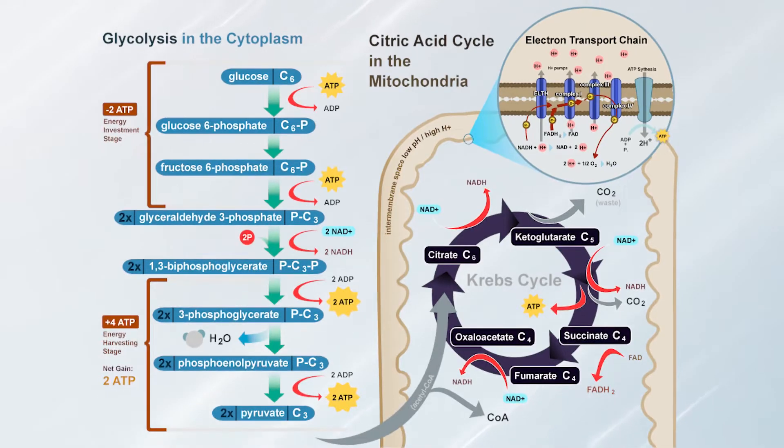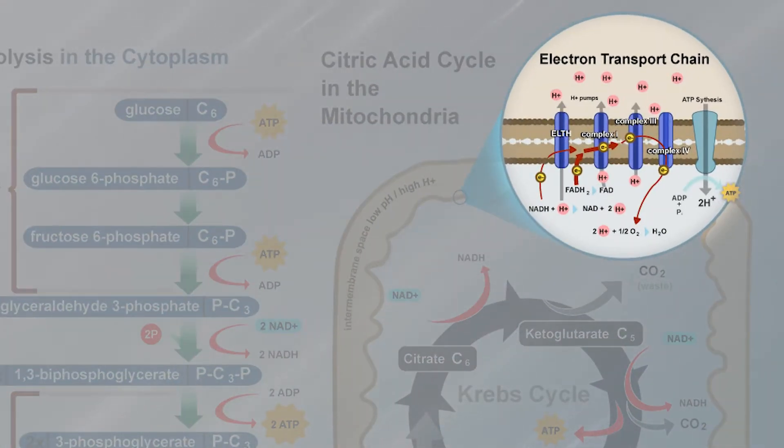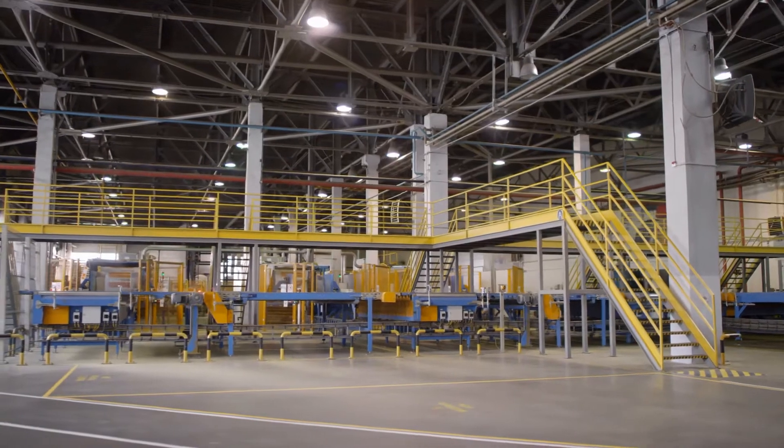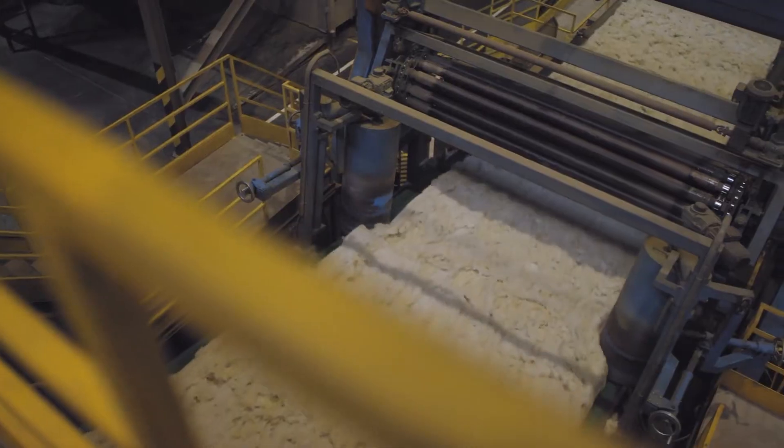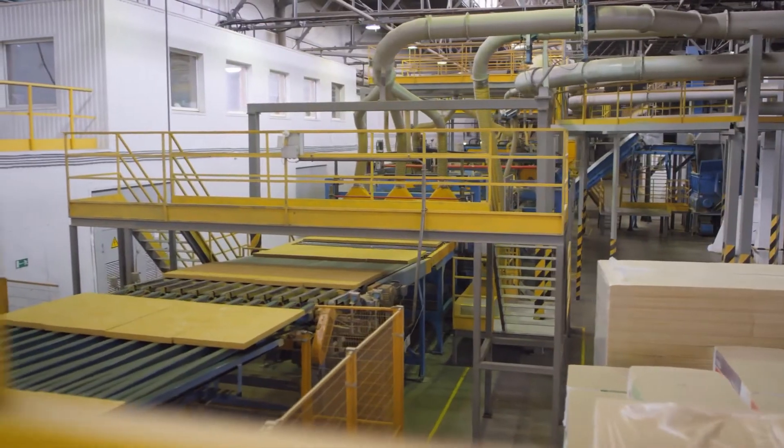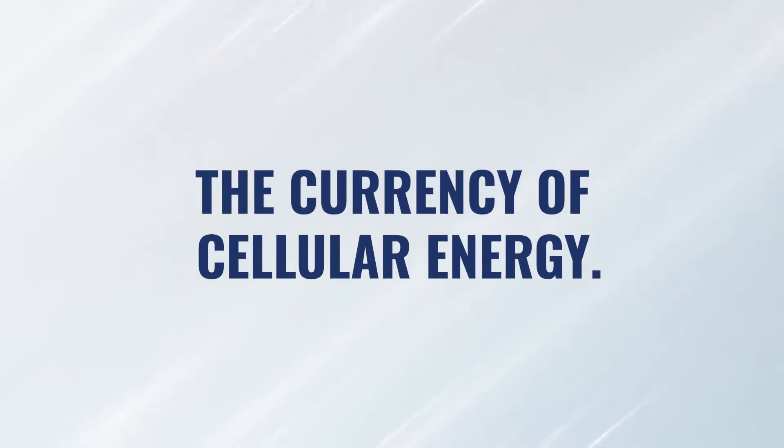The electron transport chain is literally the last few steps of energy production in our cells. Picture it as a factory — you need to deliver raw materials and then process those raw materials to make a product. In this case, the product is ATP, which is the currency of cellular energy. It's what cells need to do all the different jobs that cells are required to do. We have to get electrons from one end of the factory through each step until we reach the last step: energy production.